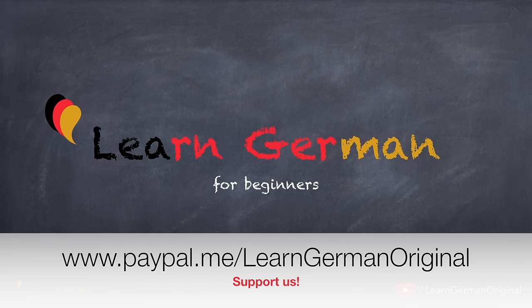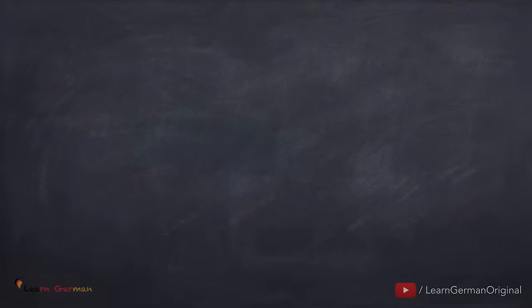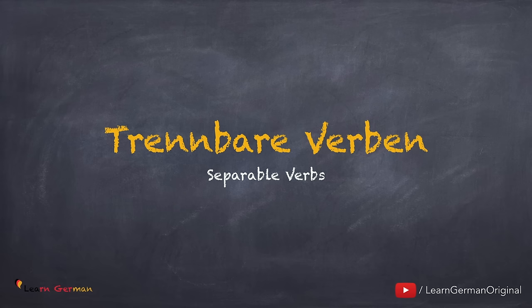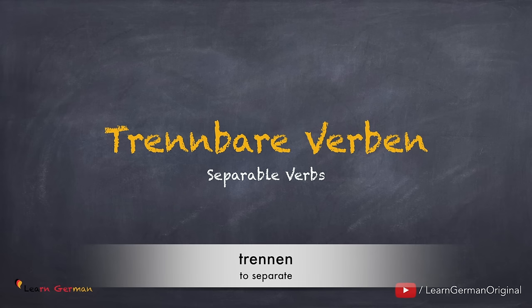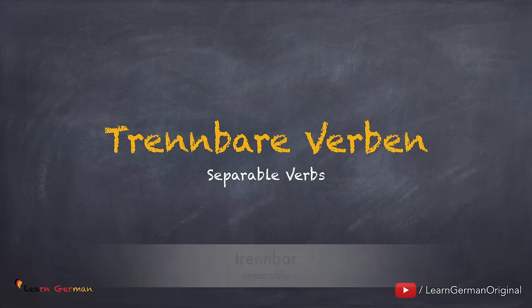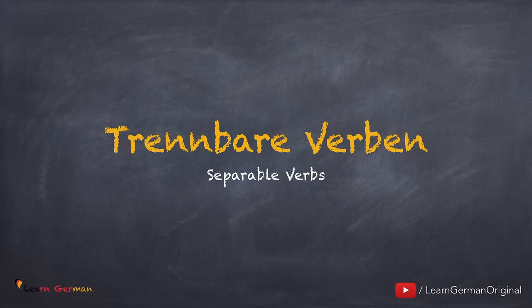Hello everyone and welcome to our video series on learning German for beginners. In this lesson you'll be learning a new form of verbs — separable verbs, or trennbare Verben. Lektion 37: Trennbare Verben. The verb 'trennen' means to separate, and we make an adjective out of it which is known as 'trennbar'. So all the verbs which can be separated are known as trennbare Verben.